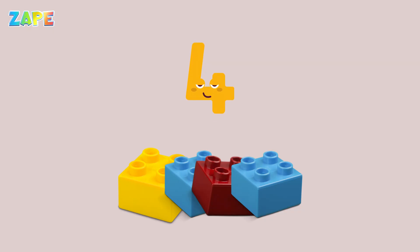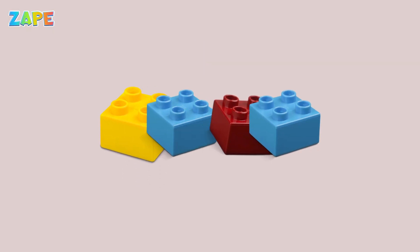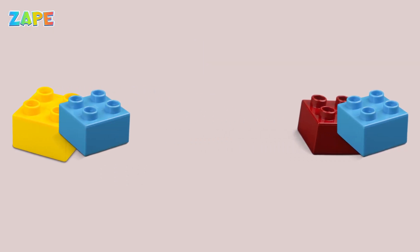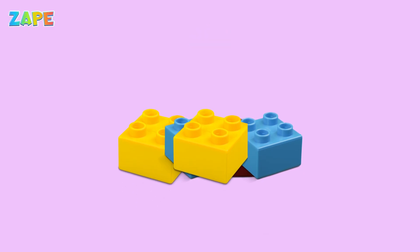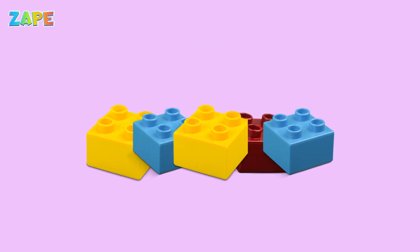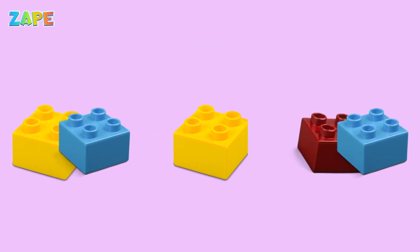Now number four: we can make two and two — even again. Now five blocks: two here, two there, one still left. Another odd number.